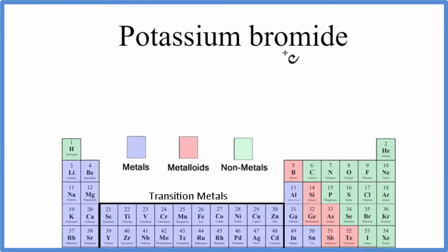To write the formula for potassium bromide, we'll go to the periodic table. Potassium, that's K, and that's a metal.